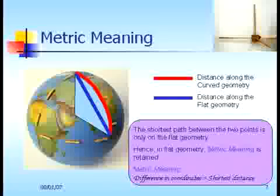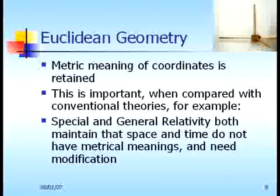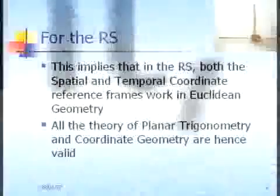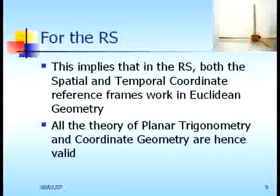This is the summary of the metric meaning in flat geometry. Euclidean geometry having a metrical meaning is very important because in the theories of conventional science — for example, in special and general relativity — space and time are seen not to have metrical meaning and require suitable modifications. Whereas in the reciprocal system, we maintain that the metric meaning of coordinates is always true. This also implies that in the reciprocal system, both the spatial and the temporal coordinate reference frames work in Euclidean geometry. Consequently, all the theory of planar trigonometry, coordinate geometry, and even solid geometry are hence valid.